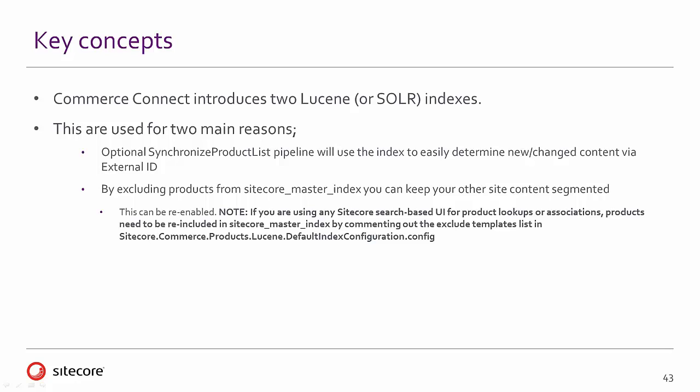One really important thing to note is that by default in most Commerce Connect installations, your Commerce Product Index is completely segregated from your Sitecore Master Index. This means that occasionally when navigating the Sitecore user interface you will sometimes see those Sitecore products and sometimes you won't. If you are using any Sitecore search-based user interface for product lookups or associations, these need to be re-included in the Sitecore Master Index in order to appear in the user interface.